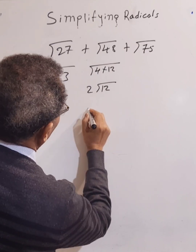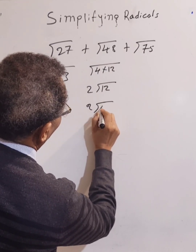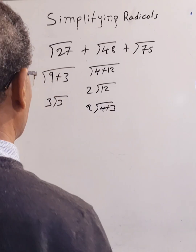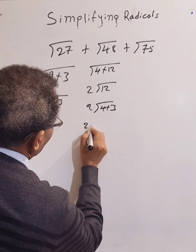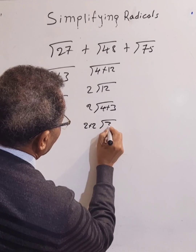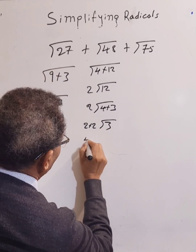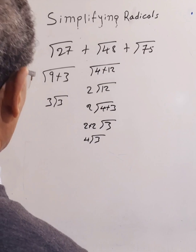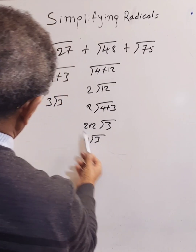Now 12 can still be simplified: 12 is 4 times 3, so square root of 4 is 2 again — giving us 2 times 2, which is 4. So √48 simplifies to 4 root 3. As you can see, they all share the same radical, root 3.